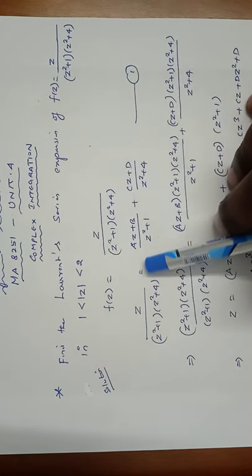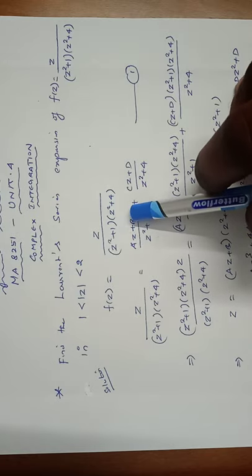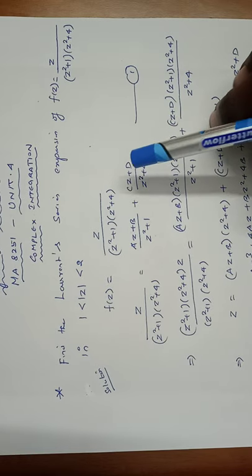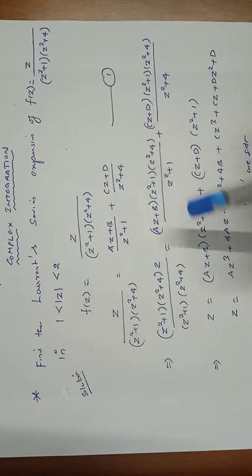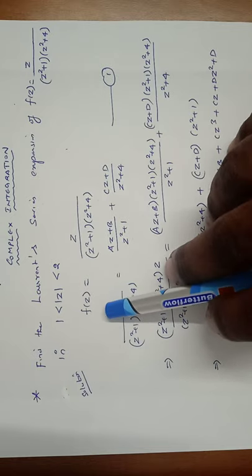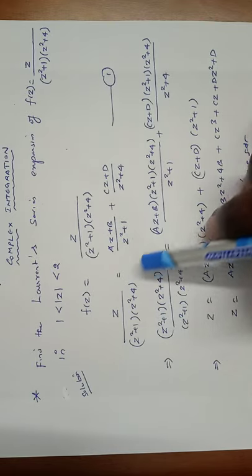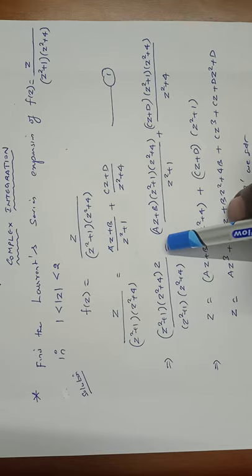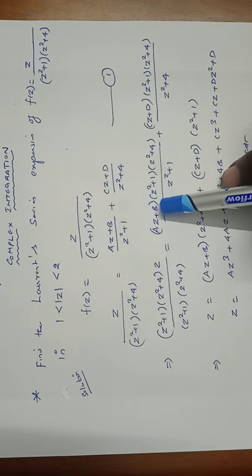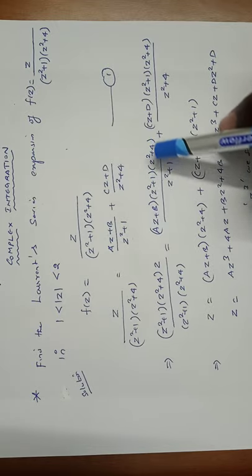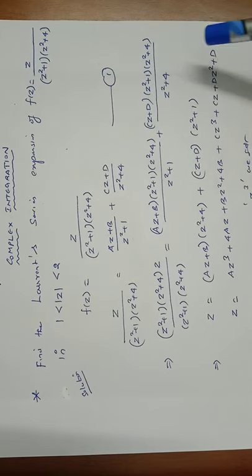Applying the method of partial fractions: z / ((z² + 1)(z² + 4)) = (Az + B)/(z² + 1) + (Cz + D)/(z² + 4), which is equation number 1. Multiplying both sides by (z² + 1)(z² + 4), we get z = (Az + B)(z² + 4) + (Cz + D)(z² + 1).